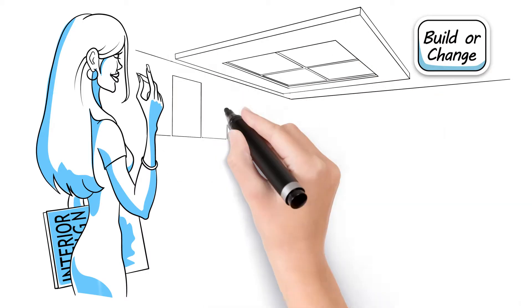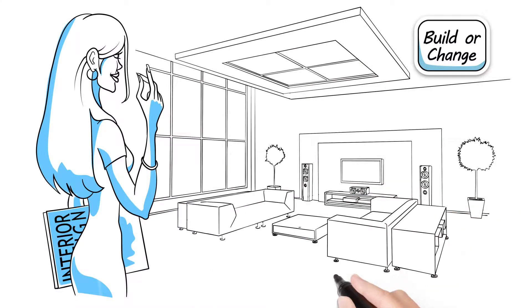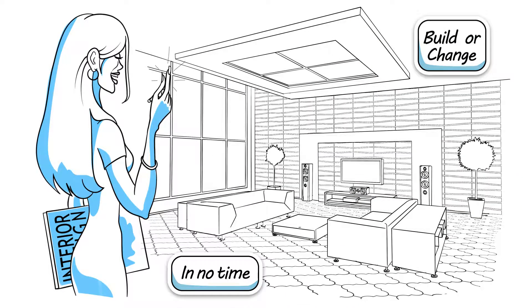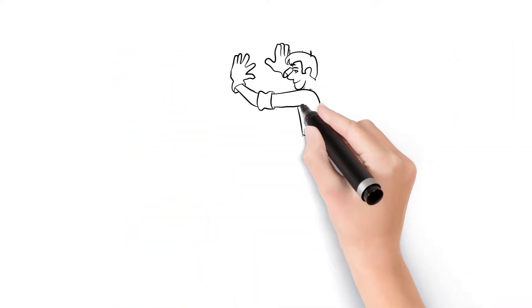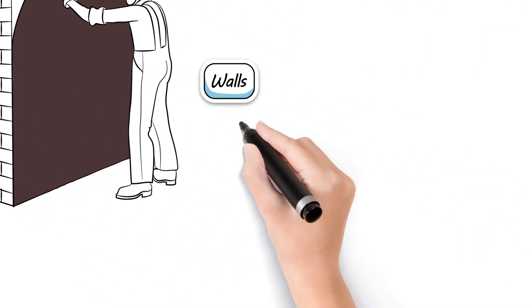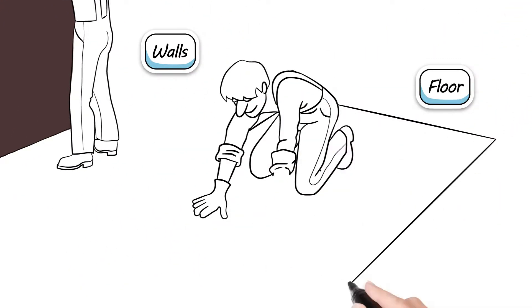With MBS, you can build or change your interior wall and flooring surfaces in no time. The secret is using magnetic layers attached to walls, floors and ceilings.